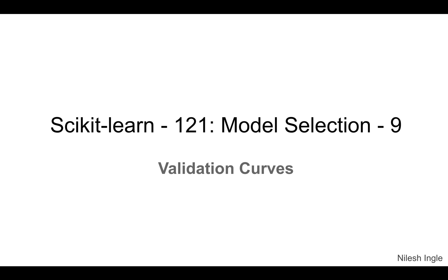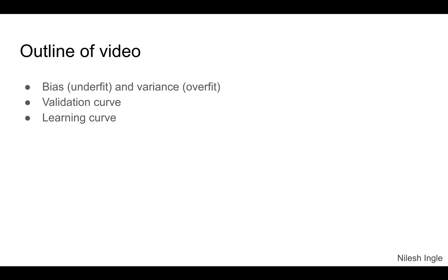Here is a list of items that will occur: we'll look at what bias and variance is, and then we'll look at how validation curves and learning curves can help us visualize how the training is going on.